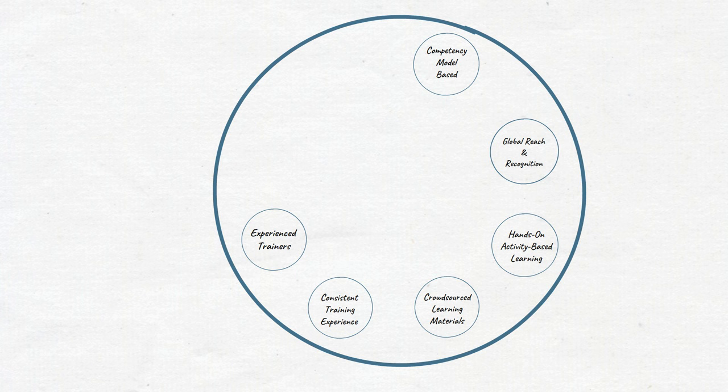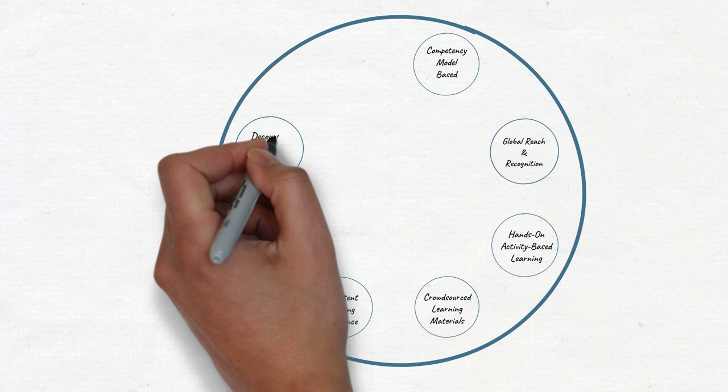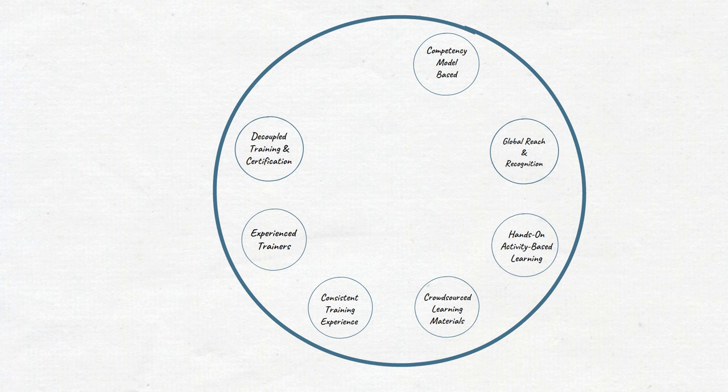To receive professional Scrum certification, you need to prove your knowledge, your understanding, and ability to apply Scrum in the real world. Tests are decoupled from training to validate your learning whether learned in a Scrum.org class or in other ways. Although each Scrum.org training class includes a free attempt at a Scrum.org certification, you still need to prove your knowledge by passing the assessment.